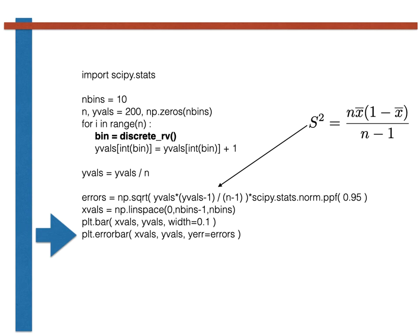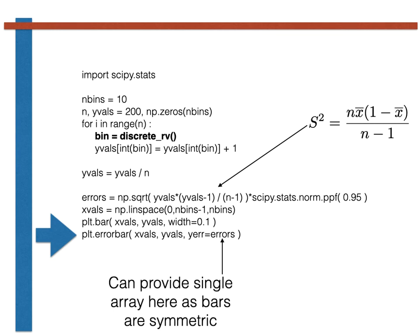Notice also that last time we used the error bar function, we passed this function two lists, and that here we only pass one. The reason that we passed two arrays last time is because the difference between the lower percentile and the median and the difference between the upper percentile and the median can be different when we do resampling.